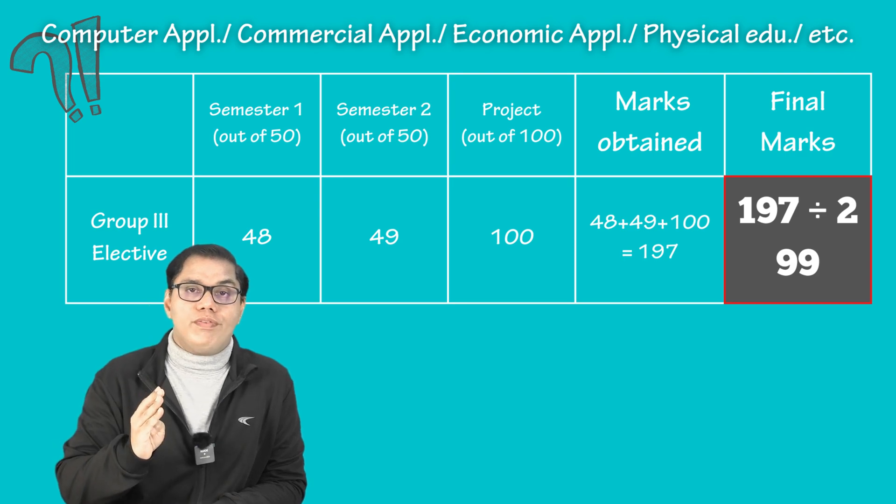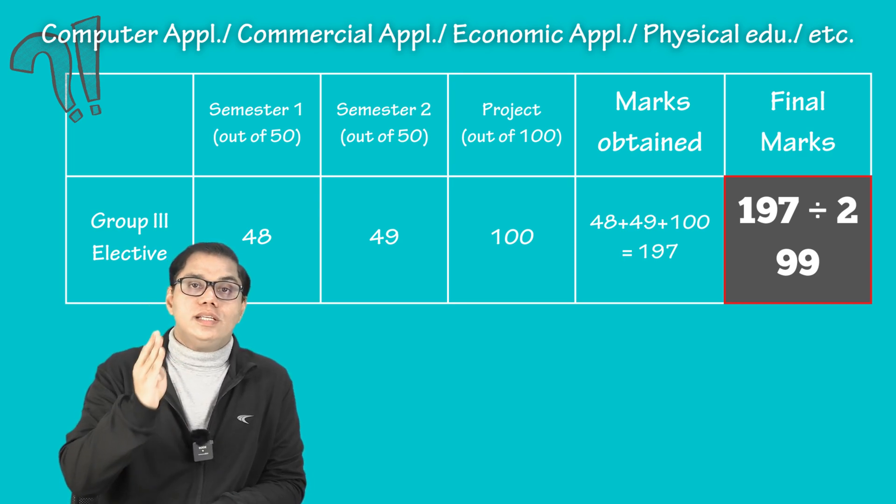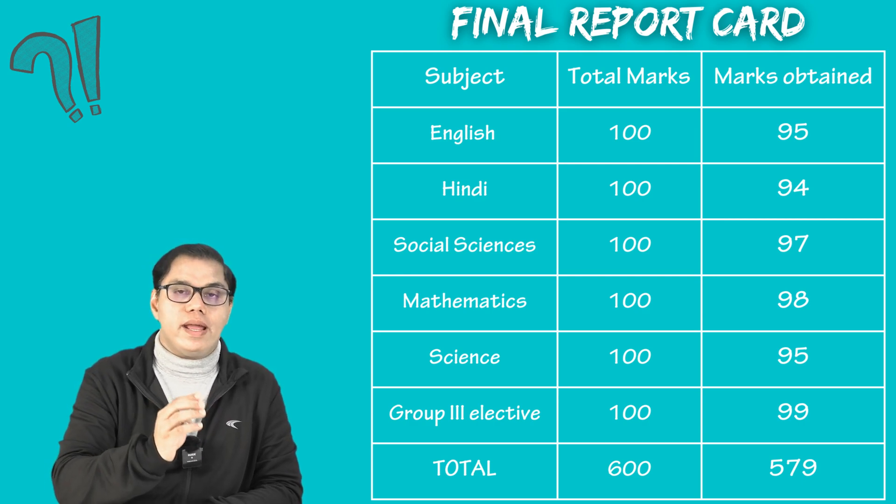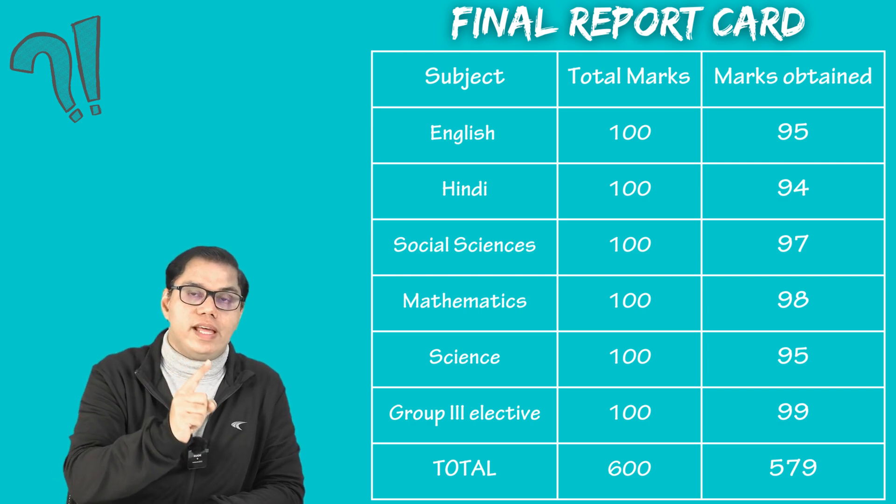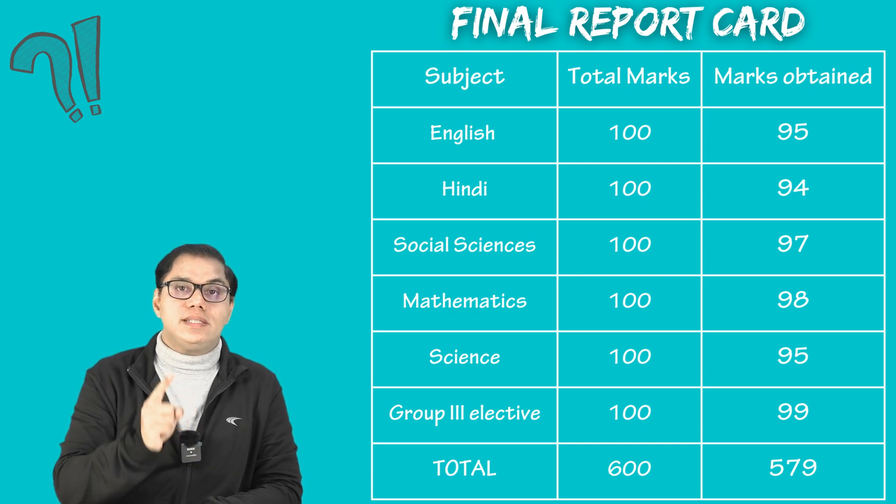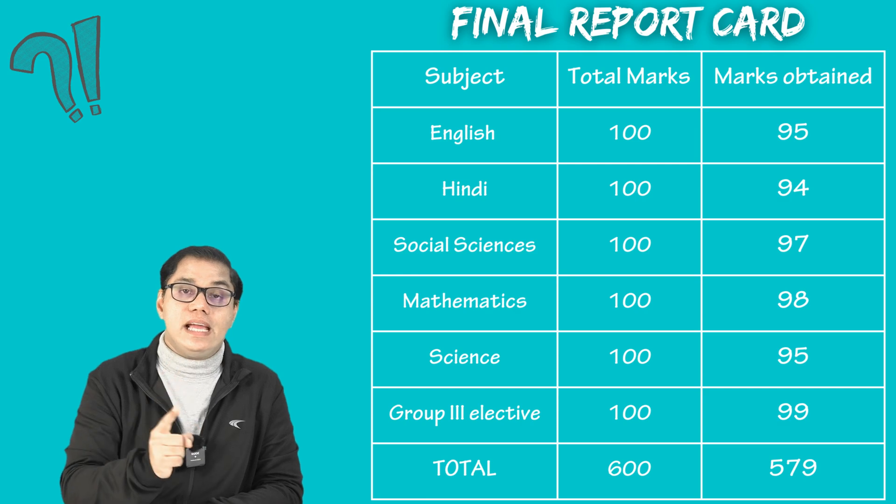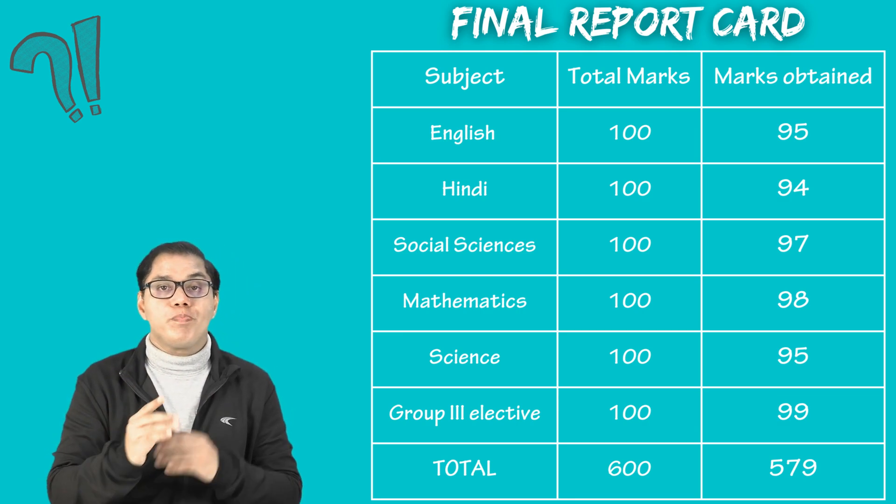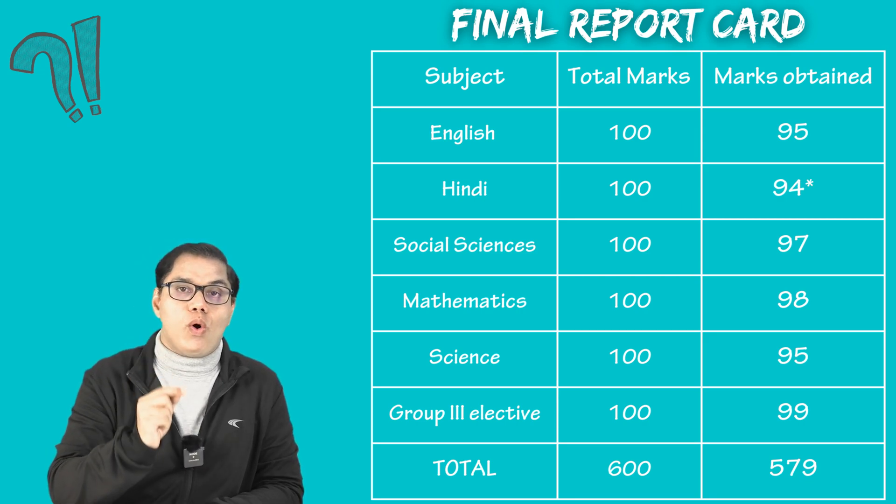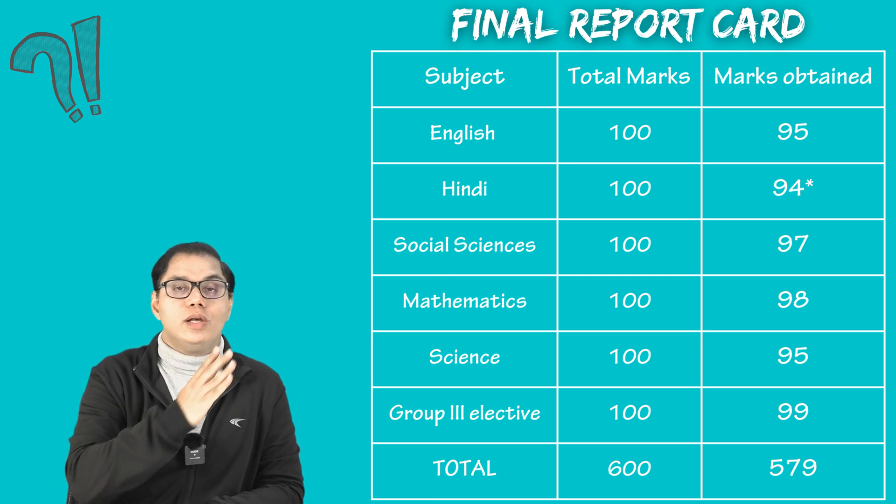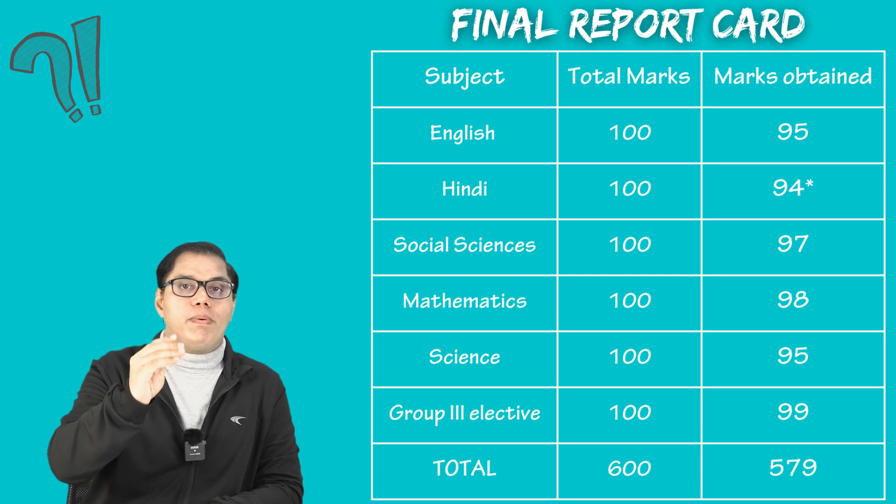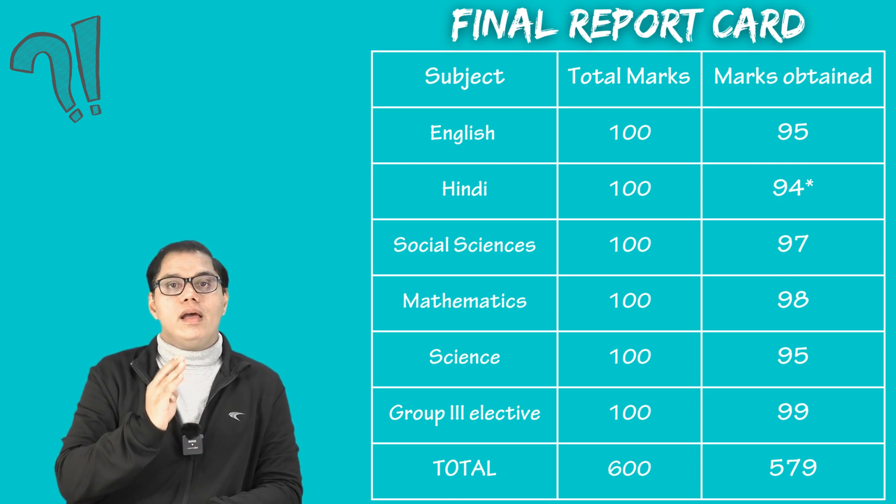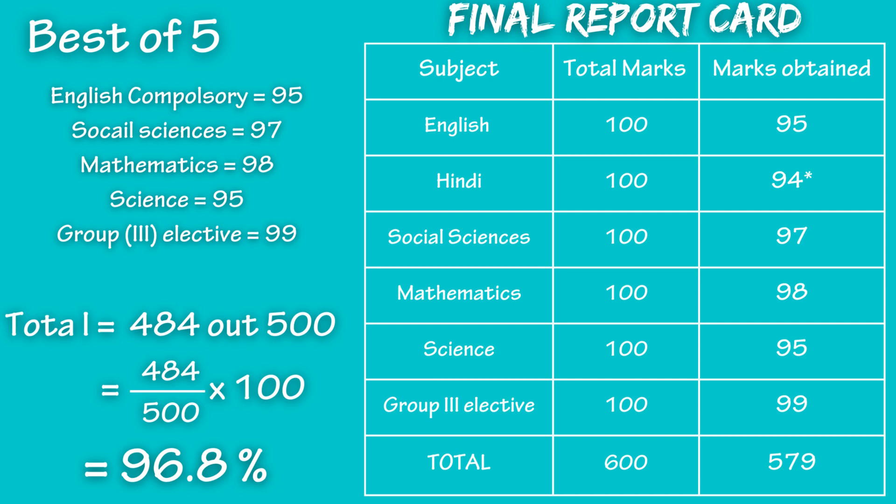On your screen now you have marks of 6 different subjects scored by a student. We have to select best 5 out of this 6 but remember best 5 means English plus best 4. Yes, English is compulsory in the calculation of best 5. So English plus best 4. We can see over here that the least marks scored by a student is in Hindi which is 94. So that will be left out and English plus the other 4 subjects will be taken or considered for calculation of the marks. Here, we see that total marks in 5 subjects is 484.